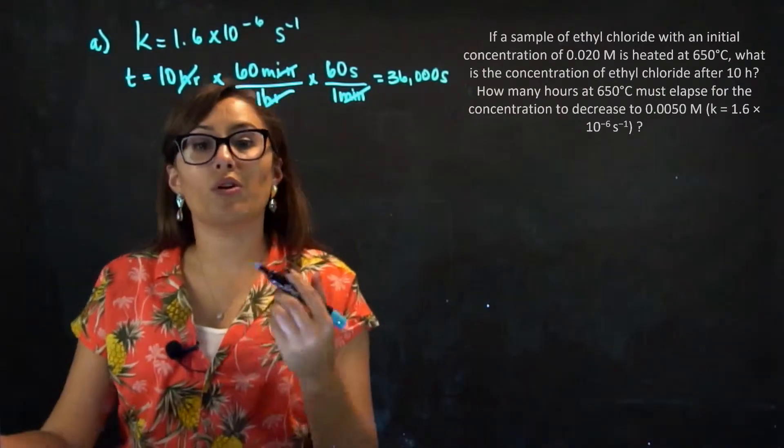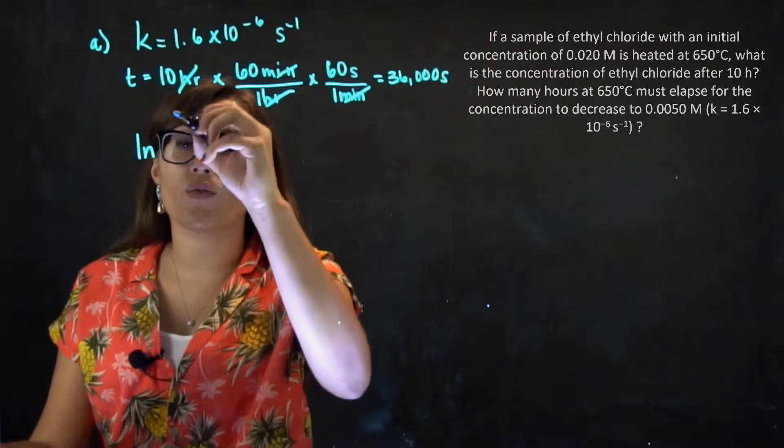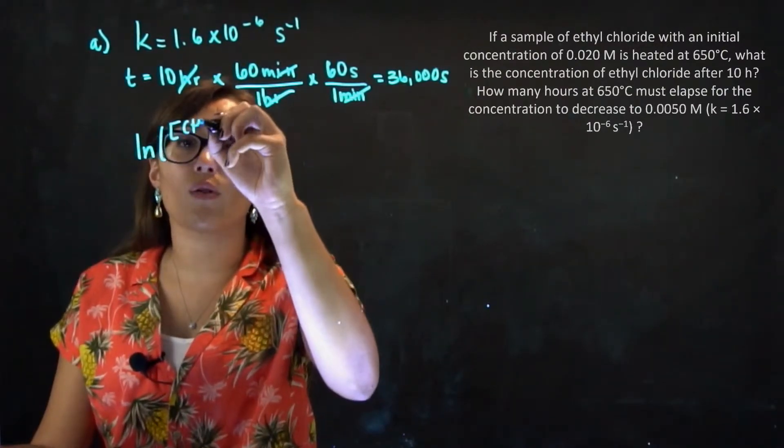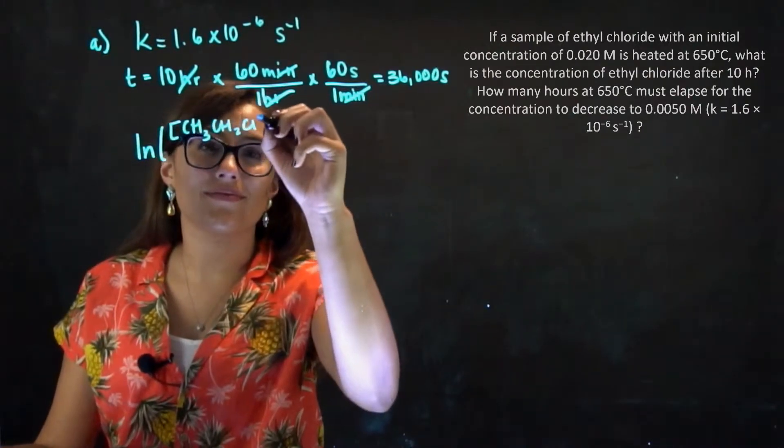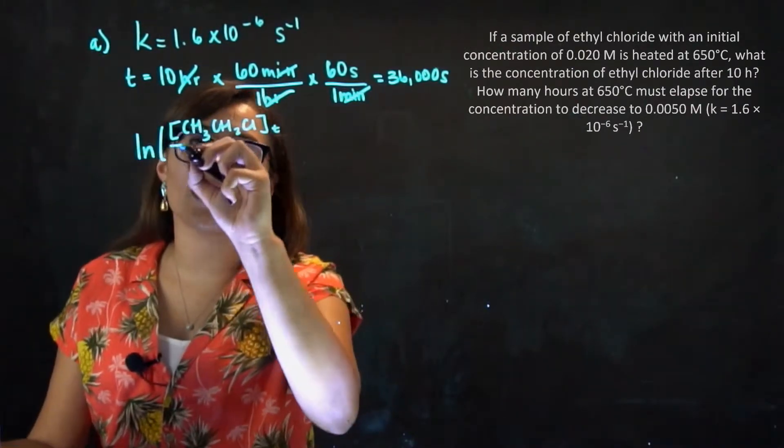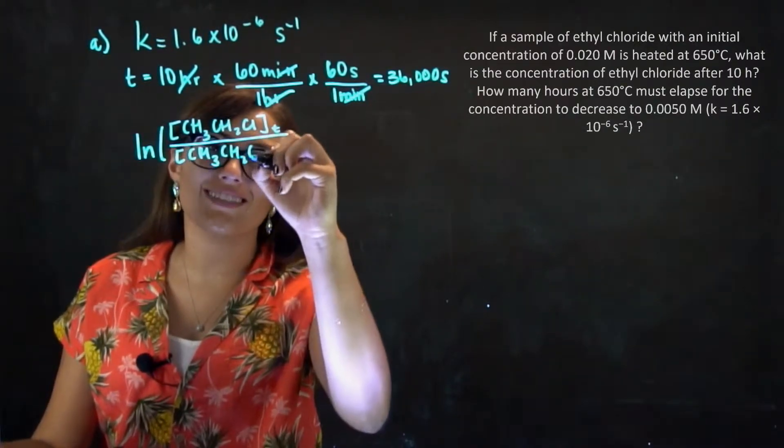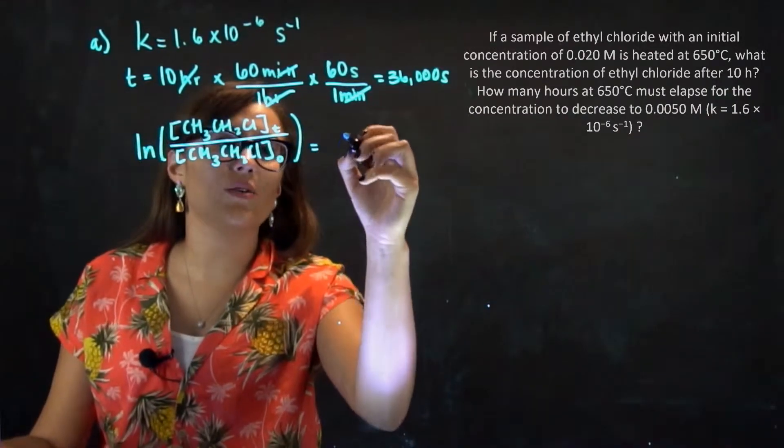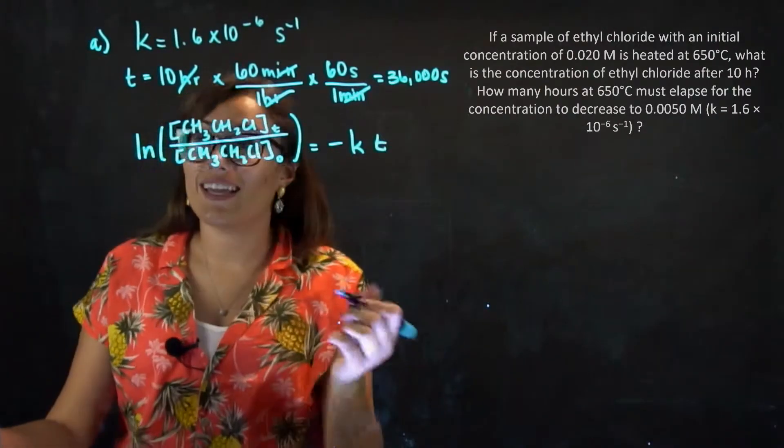So in the next part, we're going to use the first order rate equation again, where we have our concentration of our ethyl chloride at some time. In this case, it's 10 hours, to our initial concentration of CH3, CH2, CL, which this is all ethyl chloride.